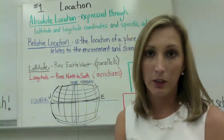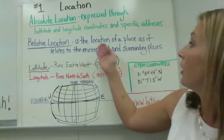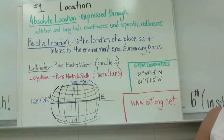So relative location, if you'll take a minute and write this down, is the location of a place as it relates to the environment and surrounding places.